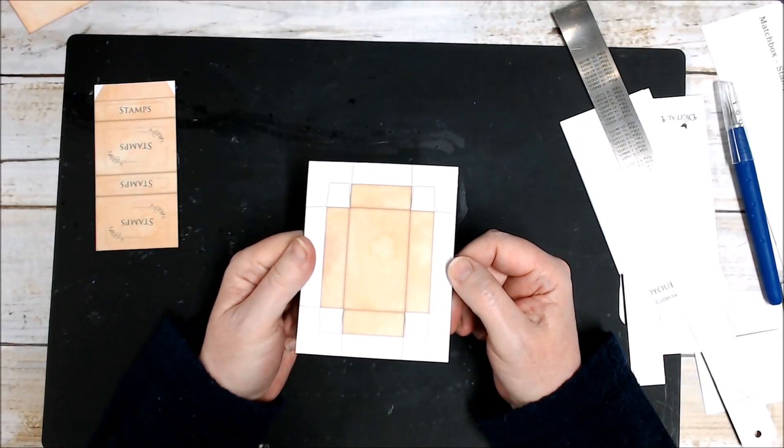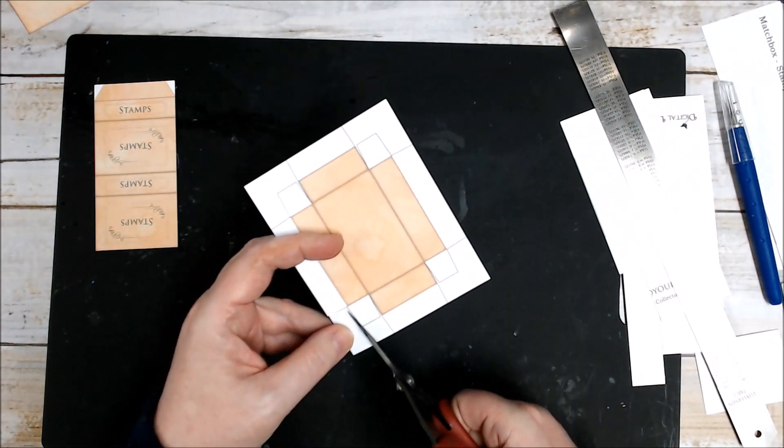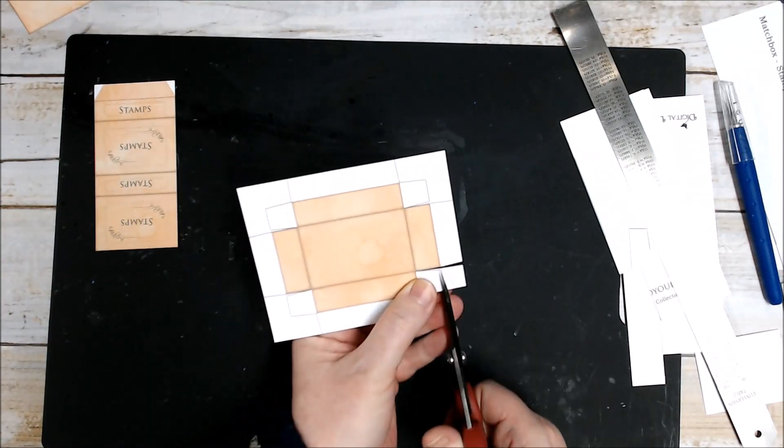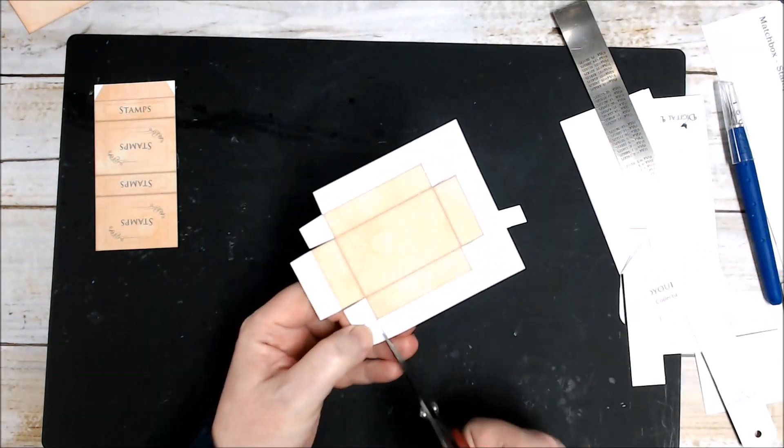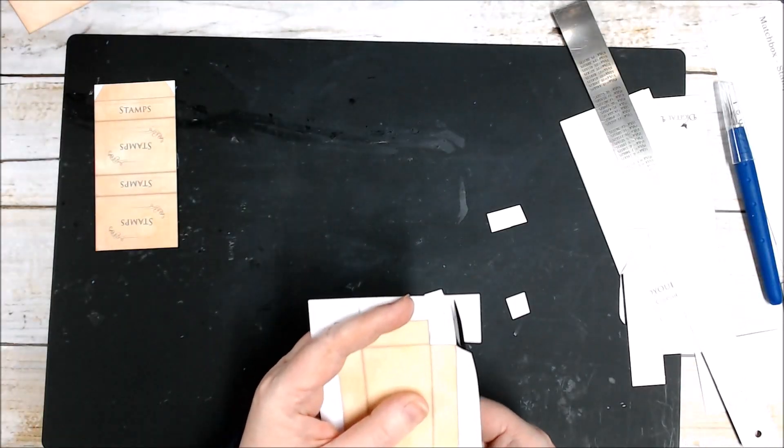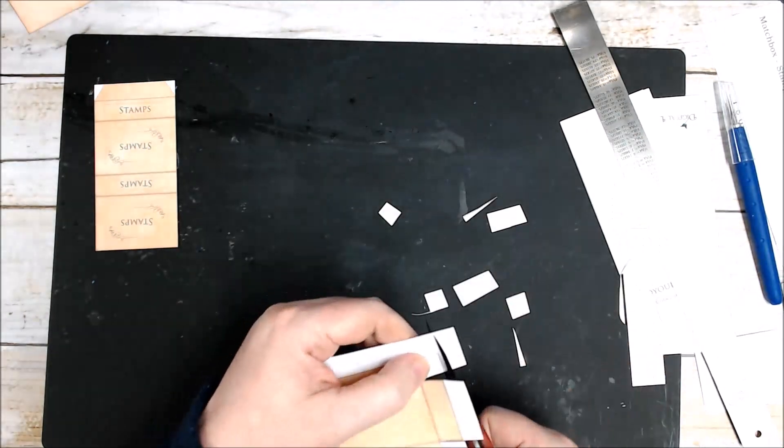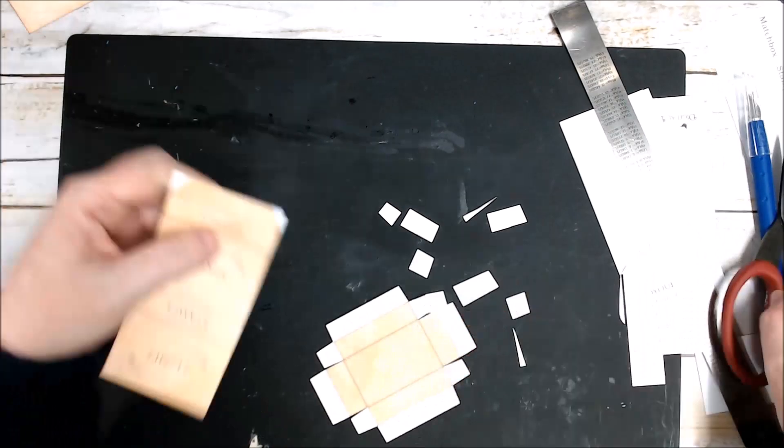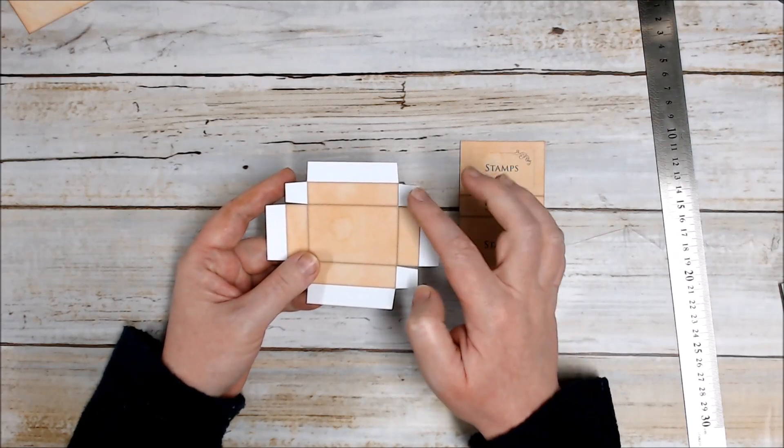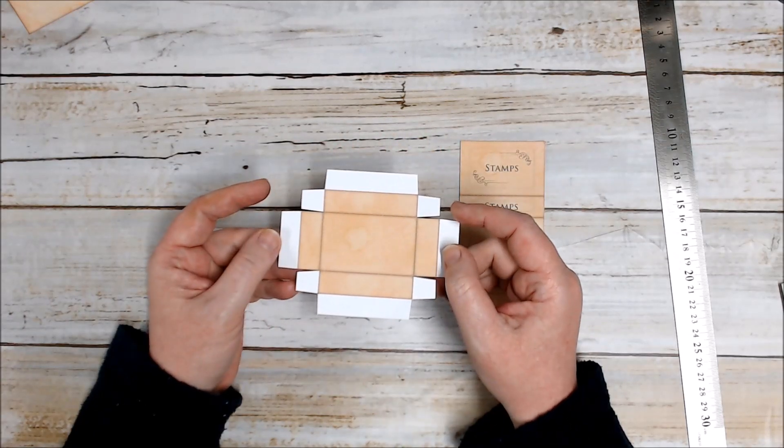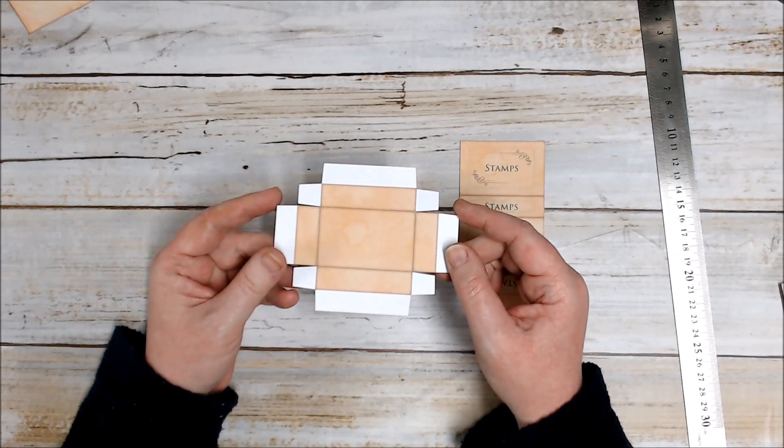Once I've got my matchbox to this stage I'm going to cut the rest of it with scissors. Once you've cut out your matchbox base make sure you haven't cut any of these white flaps off - these will give us a little bit more stability when we're building our box. I've printed this out on 160 GSM paper just to make my box a little bit more sturdy.